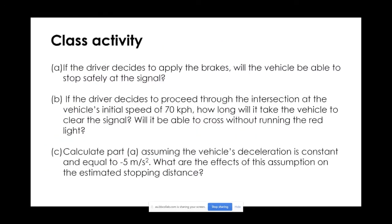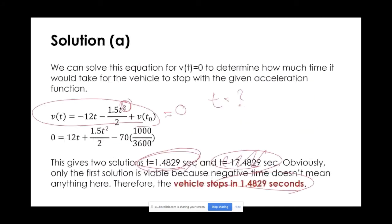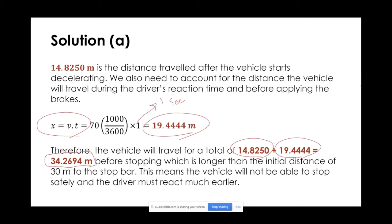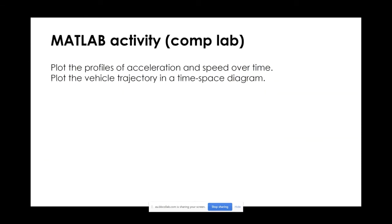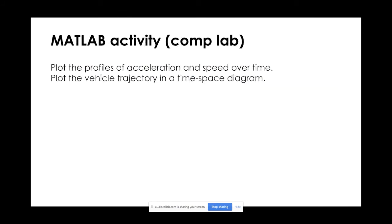We only had 30 meters from the stop bar. So the vehicle will stop somewhere about 4 meters past the stop bar. This means the vehicle will not be able to stop safely, and the driver must react much earlier. In this case, the vehicle will not stop before the stop bar. There is a computer lab activity where you should plot the acceleration and speed profiles over time and plot the vehicle trajectory on a time-space diagram — that's a MATLAB practice exercise for you.